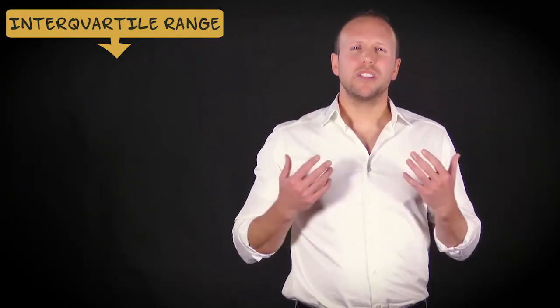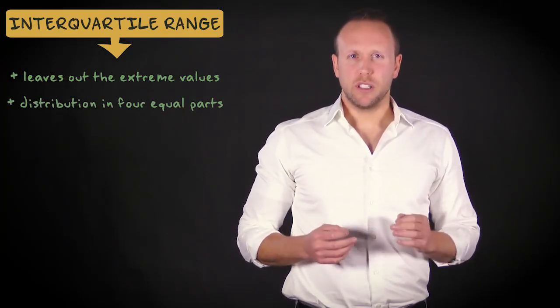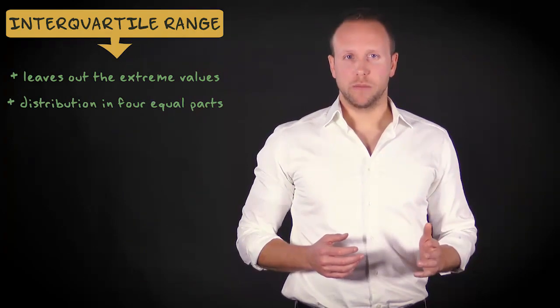Another measure of variability, the interquartile range, is a better measure of dispersion, because it leaves out the extreme values. It basically divides your distribution in four equal parts. So, if your distribution looks like this,